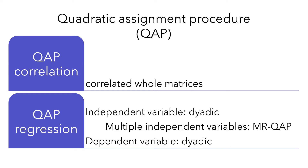CREP means Quadratic Assignment Procedure. It is a nonparametric statistical test to determine the correlation between two networks. CREP correlation is a technique designed to correlate whole matrices using simulations to determine statistical significance. CREP regression is a technique that allows you to model the values of a dyadic dependent variable using one or more dyadic independent variables. If you have multiple independent variables, then you use multiple regression CREP, i.e., MR CREP.